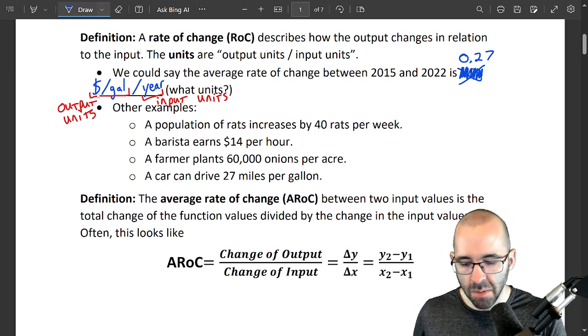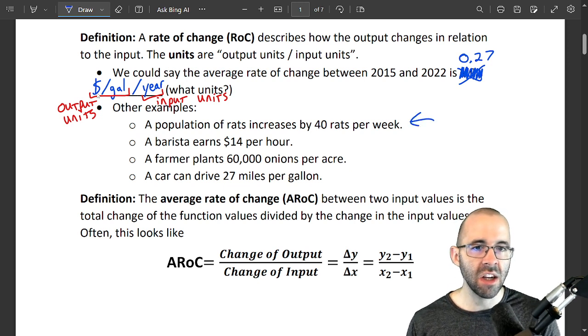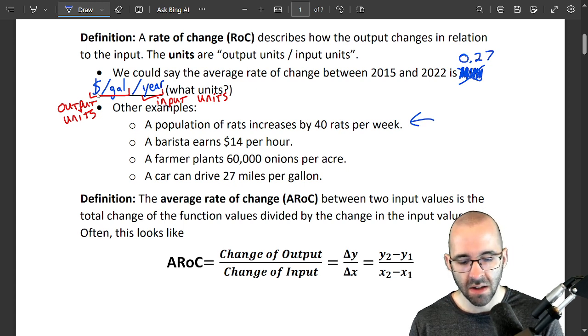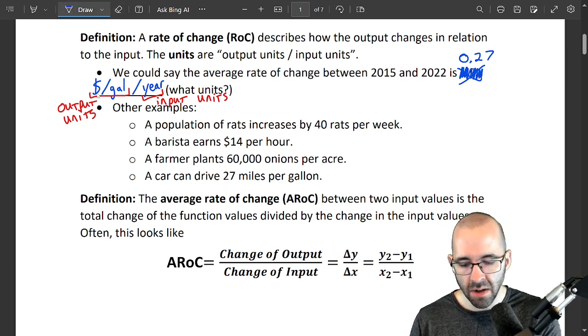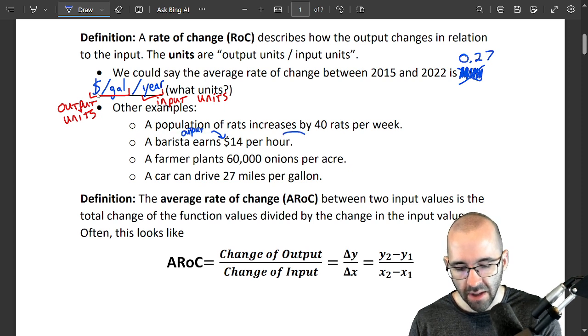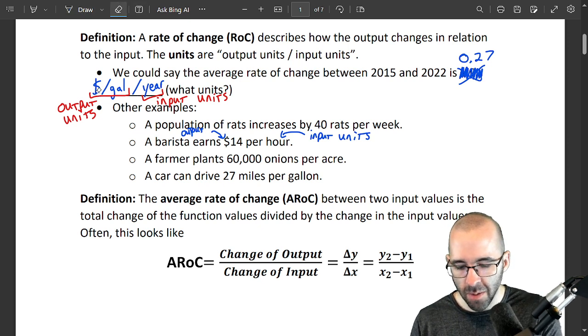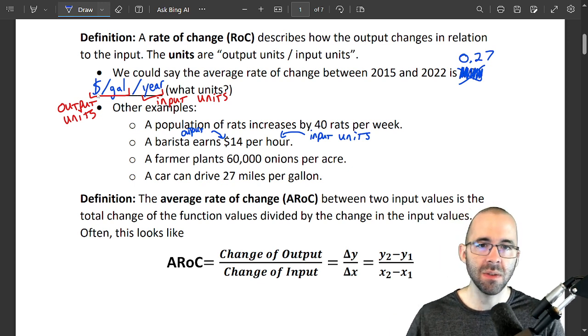You can see that with some other examples. Maybe we're looking at a population of rats. What would their rate of change look like? Maybe we say their rate of change is they're increasing by about 40 rats per week, and again you could see this is output units, this is input units. A barista could earn $14 per hour, and again that's going to be output units and the hour is going to be the input units. You can really see how this works. The next one: a farmer could plant 60,000 onions per acre, a car can drive 27 miles per gallon—same thing, output units per input units.